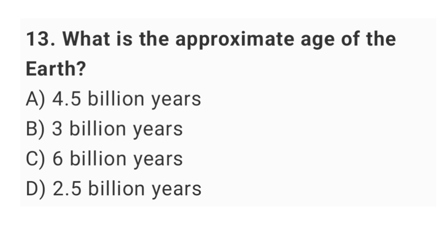Question number thirteen: what is the approximate age of the earth? The right answer is option A: 4.5 billion years.